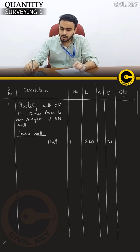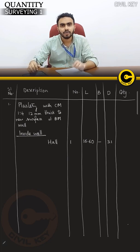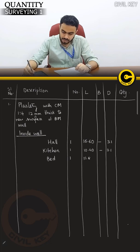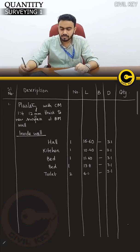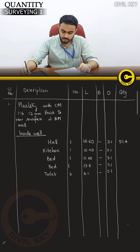Here is the flat table. The rooms: living area 10.48, bedroom one 11.60, second bedroom 13.8, toilet — two numbers of toilet, 2 dimensions, 6 meters. All height is 3.1. Inside wall plastering dimensions multiply: 51.46.